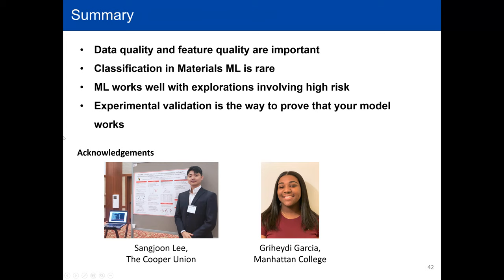Great presentation, Anton. Any questions from the audience? You can type in the chat. While we're waiting for questions, I had one. When you talk about experimental validation of a machine learning model, how far do you think one has to go to say it's really been validated? If there's a 60% chance that a structure might form in the copper-3-gold type, do you really need to do 10 different examples and see if you get it 6 out of 10 times?